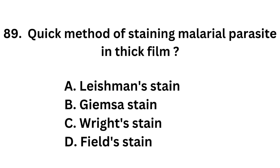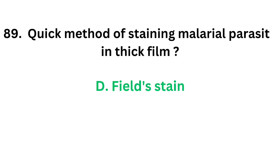Question number 89. Quick method of staining malarial parasite in thick film: Option A: Leishman stain. Option B: Giemsa stain. Option C: Wright stain. Option D: Field's stain. The correct answer is option D, Field's stain. Quick method of staining malarial parasite in thick film is by Field's stain.